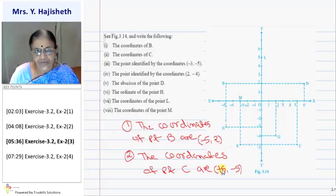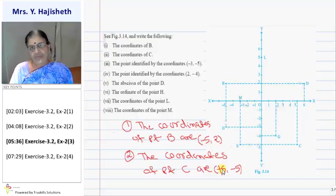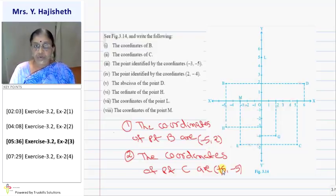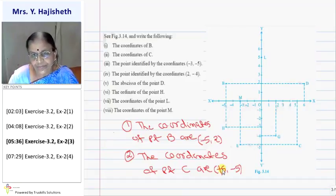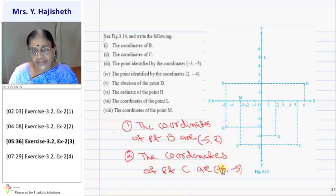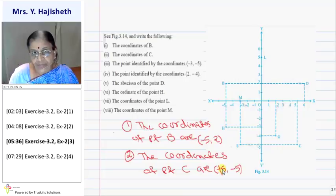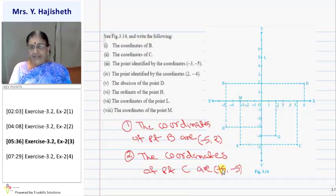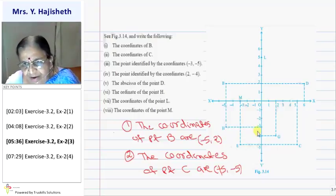The point identified by the coordinates (−3, −5): since both x and y coordinates are negative, it is in the third quadrant. There are two points in the third quadrant — D and E. Since the distance from the y-axis is 3 and from the x-axis is 5, the required point is E.